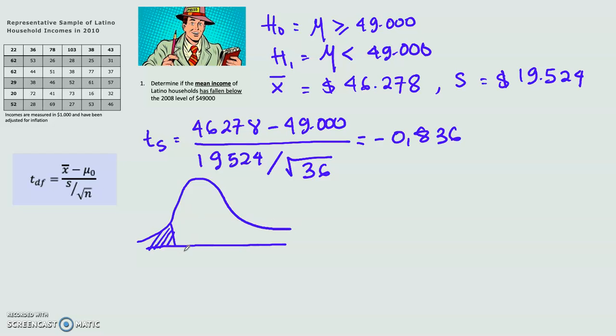To specify the critical value, we will use the t-table, and the information we need is the alpha and the degree of freedom. Because the alpha is not mentioned in the case, let's just make our own assumption. I will take the alpha to be 5%, and the degree of freedom, the formula is N minus 1, which is 35.